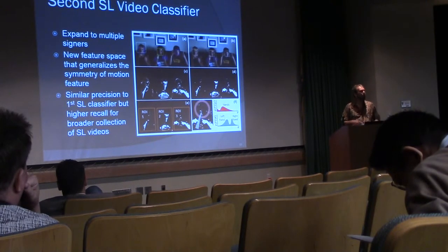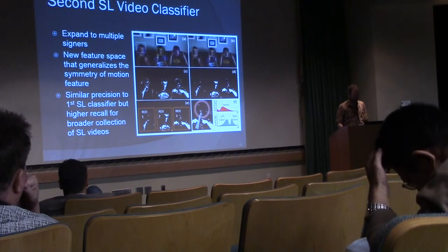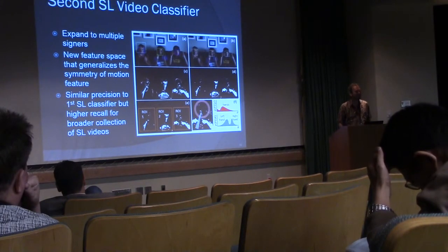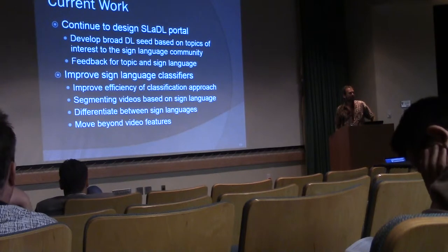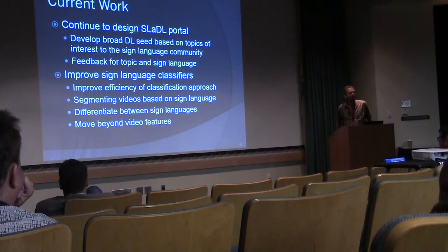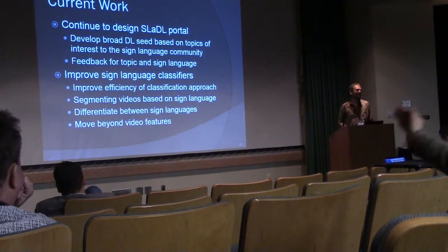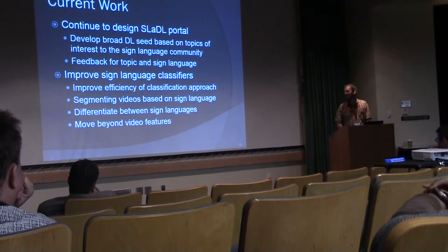We also generalized the problem beyond one signer facing the camera to allow for multiple signers. The second sign language classifier had similar precision but much higher recall for a broader collection of sign language videos, which was by design — the first classifier wasn't designed to recognize multiple people in a video. Now we're building out the portal and getting the right mechanisms in place for community feedback on the videos being presented. We're also improving the sign language classifiers and need to address algorithm efficiency, since we went overkill on processing and need to scale back for realistic deployment.